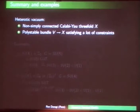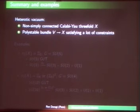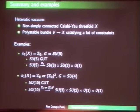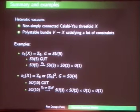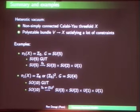To summarize, we are looking for a heterotic vacuum represented by a non-simply connected Calabi-Yau and a polystable bundle satisfying many constraints. The main example has fundamental group Z₁₂, with SU-5 structure group giving an SU-5 GUT broken by Z2 to the standard model group. With SU-4 structure group, groups like Z-mod-6 or Z3-squared are needed, giving an SO-10 GUT broken to the standard model group cross U(1) B-minus-L.